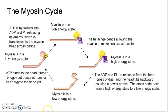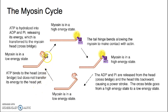Here is an illustration of the myosin cycle. We're going to start with myosin in its low energy state — no ATP or actin bound to it. ATP eventually will float around and bump into the ATP binding site. This is still myosin in a low energy state, with a bend in the tail, because the energy is still in ATP.